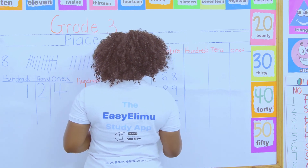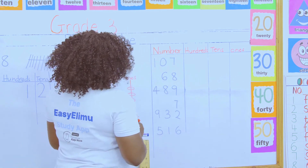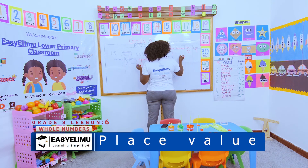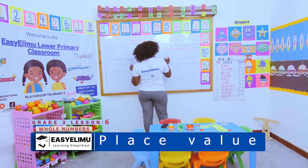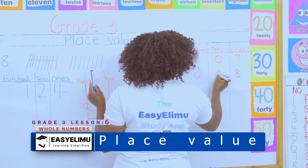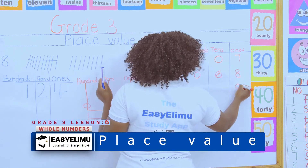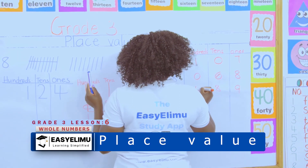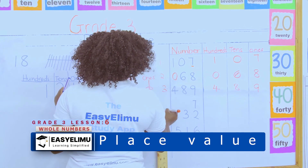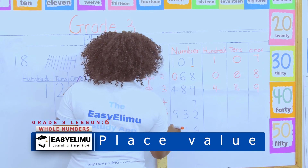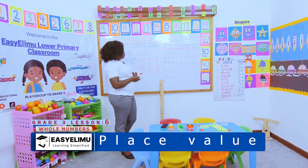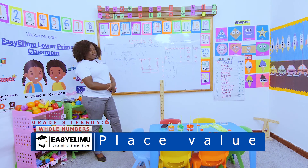Represent the numbers on the place value chart, starting from the right hand — the farthest right. When the numbers are less you put a zero before that digit. So we have eight ones, six tens, and zero hundreds. Here we have nine ones, eight tens, and four hundreds. The remaining questions are for homework. I have done the example; start from number one so you know what you are supposed to do.